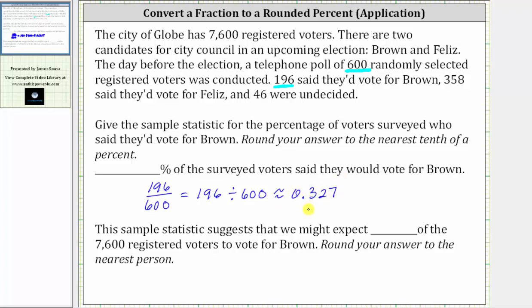Now to convert the decimal to a percent, we multiply by 100 and add a percent sign, or move the decimal point right two places, which gives us 32.7%. So approximately 32.7% of these surveyed voters said they would vote for Brown.